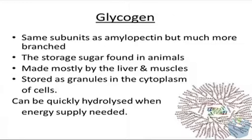If you think about the actions that animals take that plants do not — things like movement and brain activity — they require a lot more glucose quickly. The reason why organisms store things like glycogen and starch is the fact that they are insoluble. Whereas monosaccharides are soluble in liquids, glycogen and starch are not, which makes them very useful because they do not affect osmotic balance, they do not affect water potential, and therefore water does not move in or out of cells due to high levels of glycogen or starch.